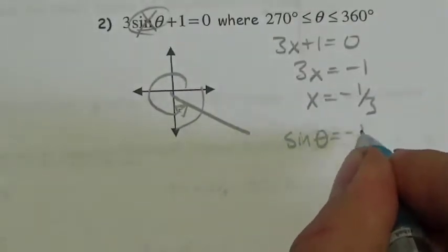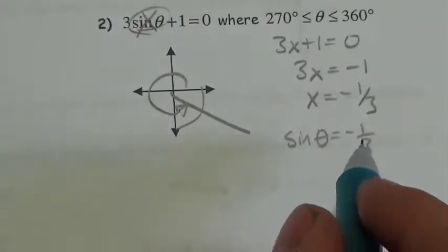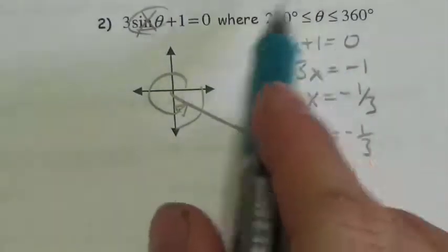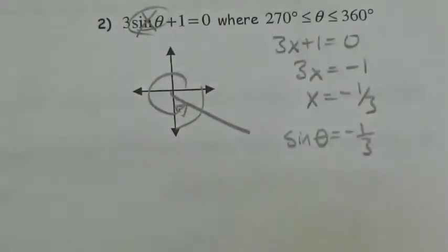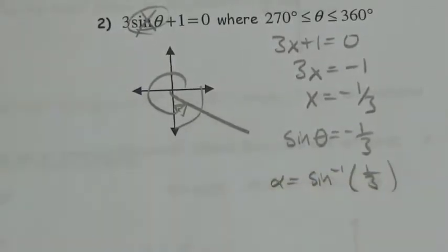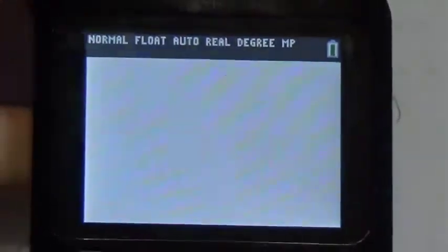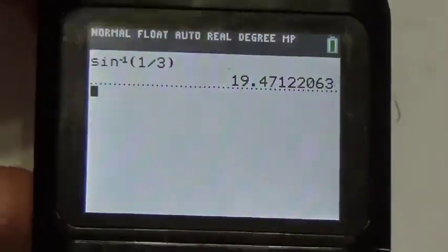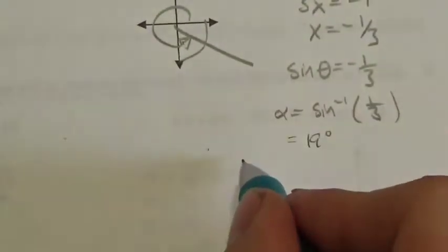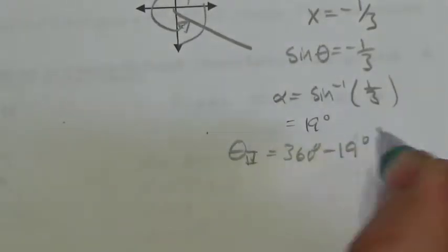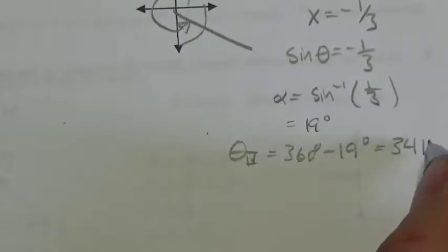Now I put sine of theta back in — this is the equation to solve. I already know what quadrant it's in. The negative confirms there is indeed an answer in quadrant 4. What I need now is the angle inside the triangle, which is the inverse sine of positive 1/3. The inverse sine of 1/3 gives about 19 degrees. So the angle inside the triangle is 19 degrees, and that is in quadrant 4.